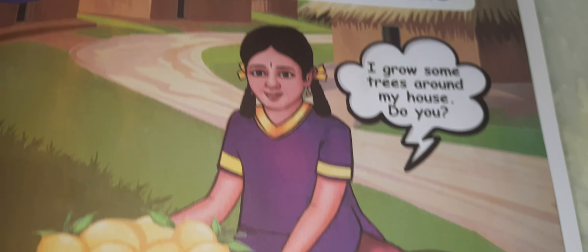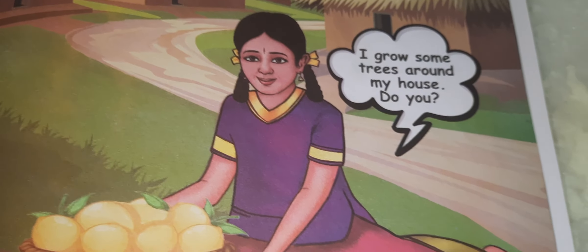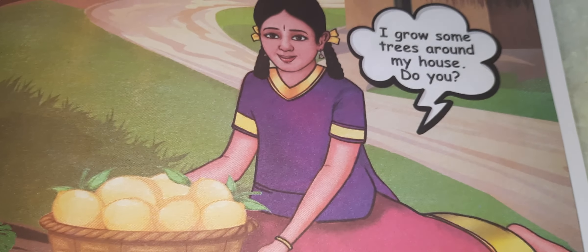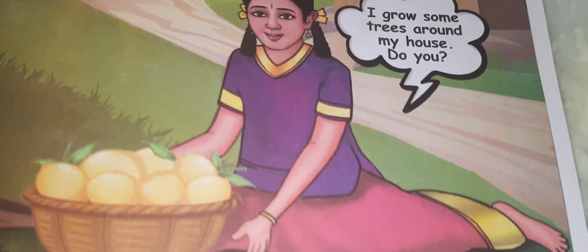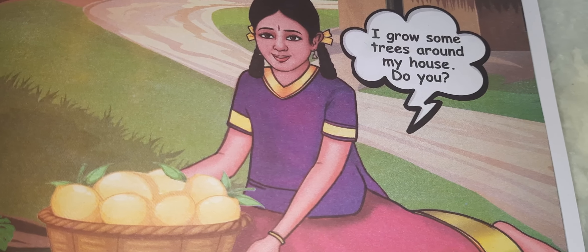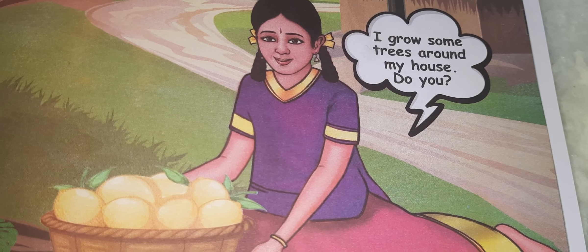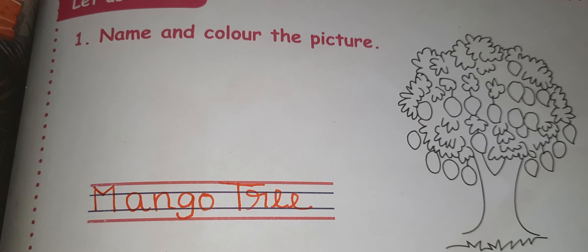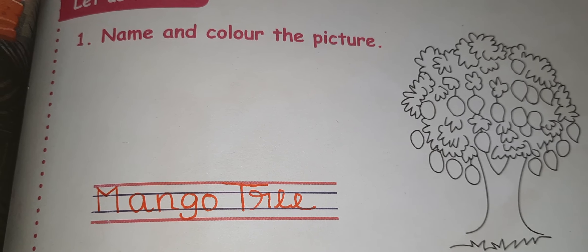One girl is sitting in this picture, you can see, and she has mangoes — ripe mangoes in a basket — and she says, 'I grow some trees around my house, do you?' Let us recall: name and color the tree. Mango tree, children, you can color it. Color the tree.